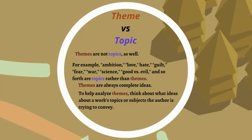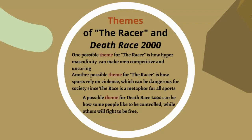To help analyze themes, think about what ideas about the work's topics or subjects the author is trying to convey — what ideas about greed, what ideas about good and evil. That's where you move to a specific theme. For example, one possible theme for The Racer is how hypermasculinity can make men competitive and uncaring. Another is how sports rely on violence, which can be dangerous for society since the race is a metaphor for all sports. A possible theme for Death Race is how some people like to be controlled while others fight to be free. These are specific themes — not just topics, but specific ideas and concepts that you then prove through textual evidence.